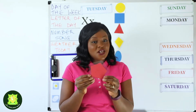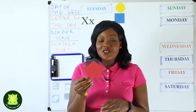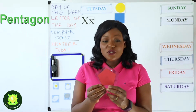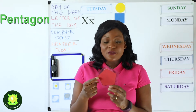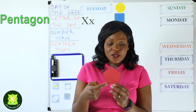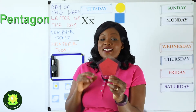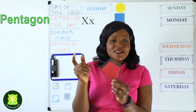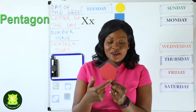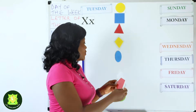Now this is a tricky shape. The name of this shape is a pentagon. Do you want to count the number of sides with me? It has one, two, three, four, five. So a pentagon has five sides and five angles. Let's count one more time: one, two, three, four, five. So this is a pentagon. Well done everyone.